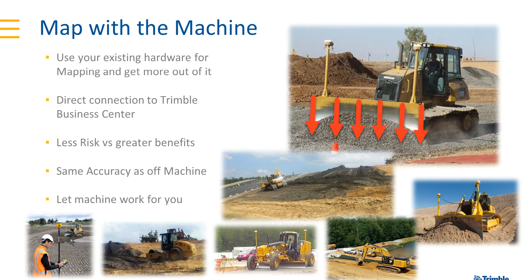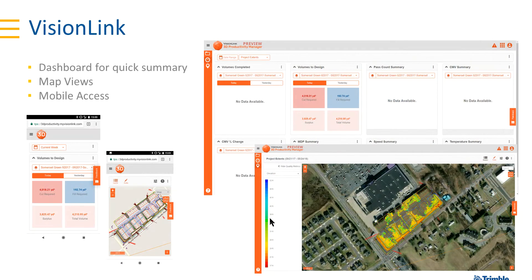It's the same accuracy whether you're using a robotic total station or GPS — you're still going to be able to get this information. The key is how do you get that data? We have a product called Vision Link. Vision Link allows us to take the map data from the machine and bring it up into a portal where we can do daily, hourly, and weekly productivity capture of information. As the machine is mapping, it's pushing data up to the cloud.